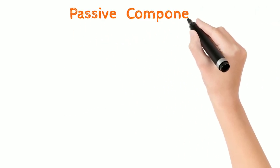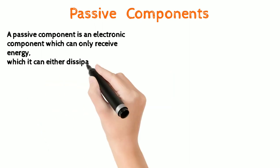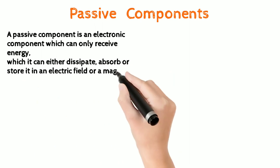Passive components. A passive component is an electronic component which can only receive energy, which it can either dissipate, absorb, or store it in an electric field or a magnetic field.